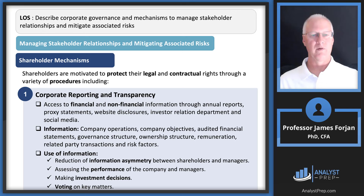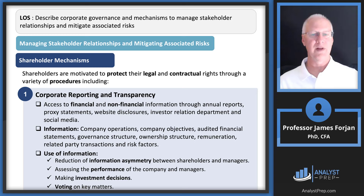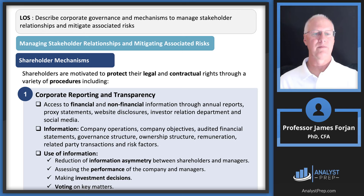Let's take a look at some mechanisms to manage this relationship and lessen the associated risks. Corporate reporting and transparency — what do we get from the executive? We get to go to the annual meeting where we get an annual report. That financial report, as we know from previous readings, has a ton of financial information but also a ton of non-financial information. We can look outside of the business to external sources as well.